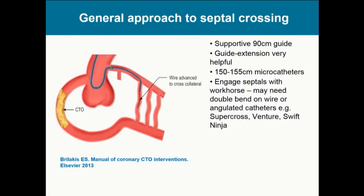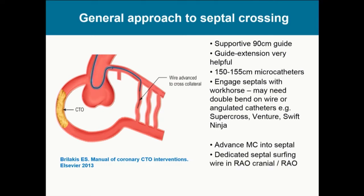The general approach to septal crossing is to use a supportive 90-centimeter guide — a guide extension can be very helpful — and a longer microcatheter of 150-155 centimeters. Engage the septal initially with a workhorse wire; sometimes these septals are quite protected and angulated, so a double wire entry with a double bend may be necessary. Sometimes we have to use dedicated angled microcatheters like a SuperCross or Swift Ninja to overcome a 90 to 120-degree angle. Once the wire is in the septal, swap out the angulated catheter for a microcatheter. This is typically visualized in an RAO cranial view — an unpanned, low magnification dedicated view. Once crossed, confirm position; it's vital to do this in LAO and LAO cranial positions.